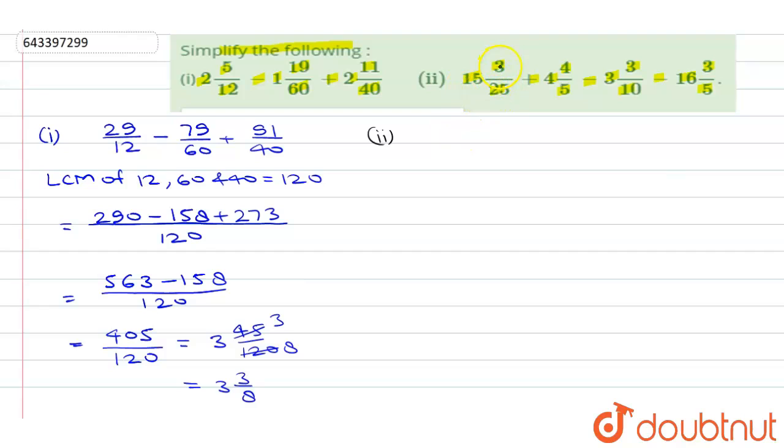Plus, 5 times 4 is 20 plus 4 is 24/5, minus 10 times 3 is 30 plus 3, 33/10, minus 16 times 5 is 80 plus 3, 83/5.